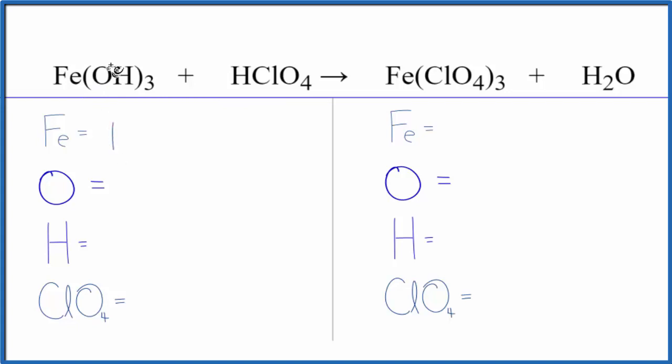We have one iron atom, we have one oxygen here, but three times the one, so we have three of those, three times the one, three hydrogens, plus one hydrogen here. So we have four hydrogen atoms.